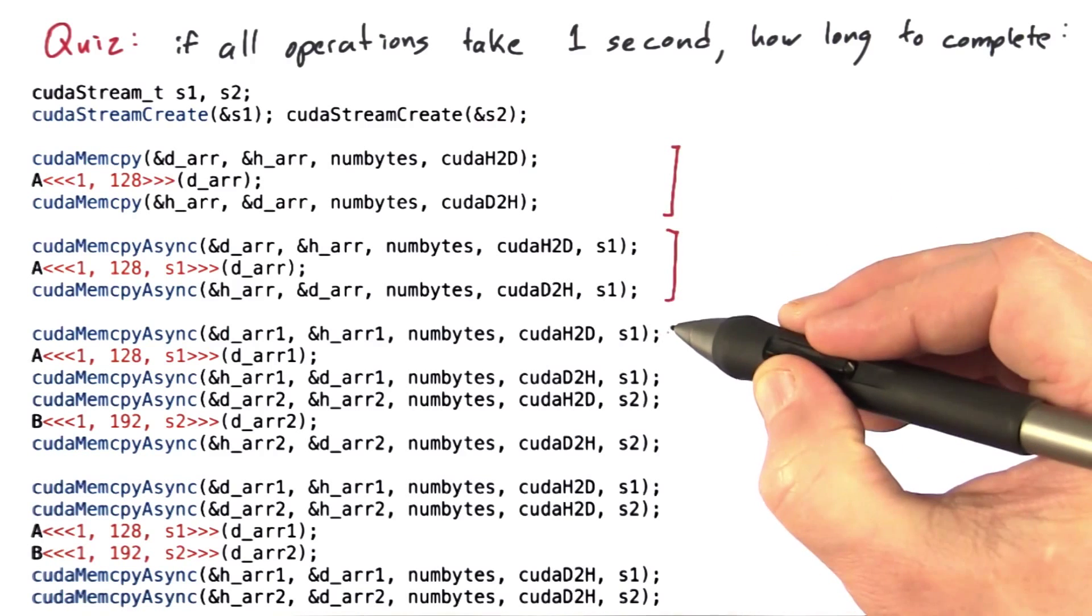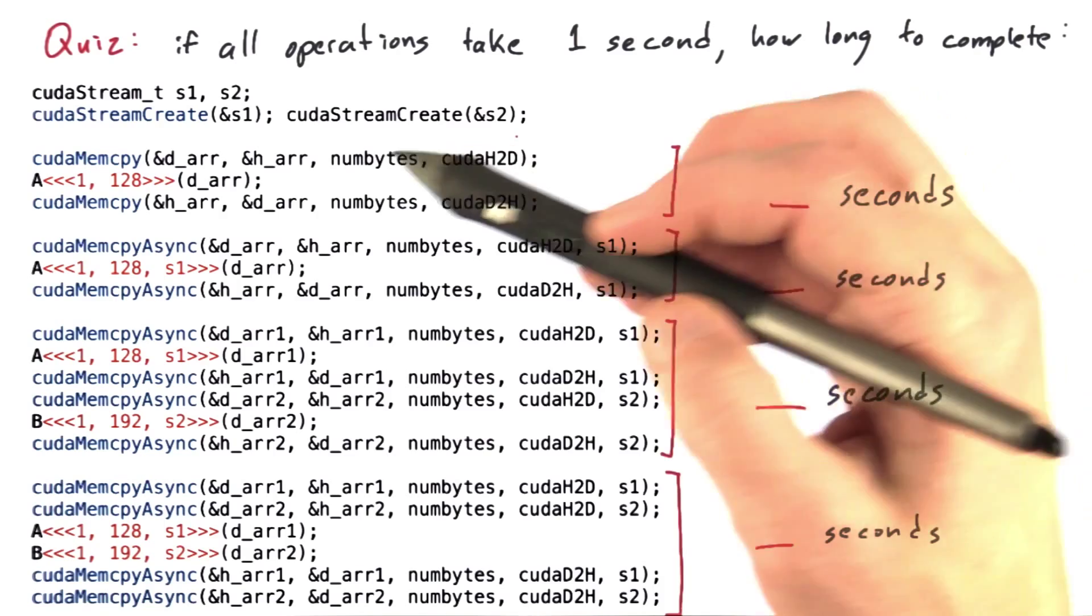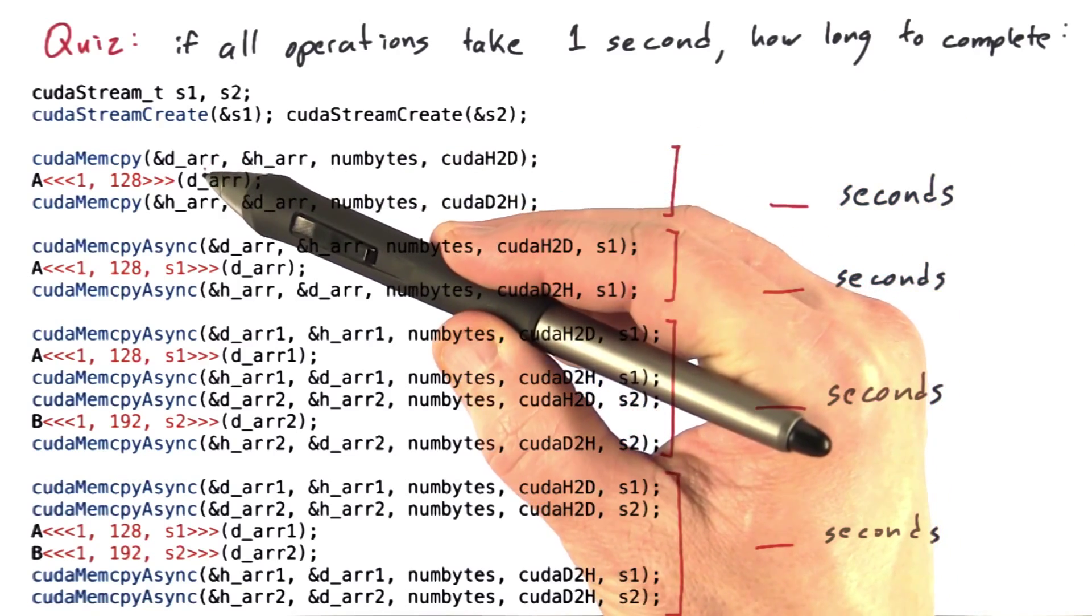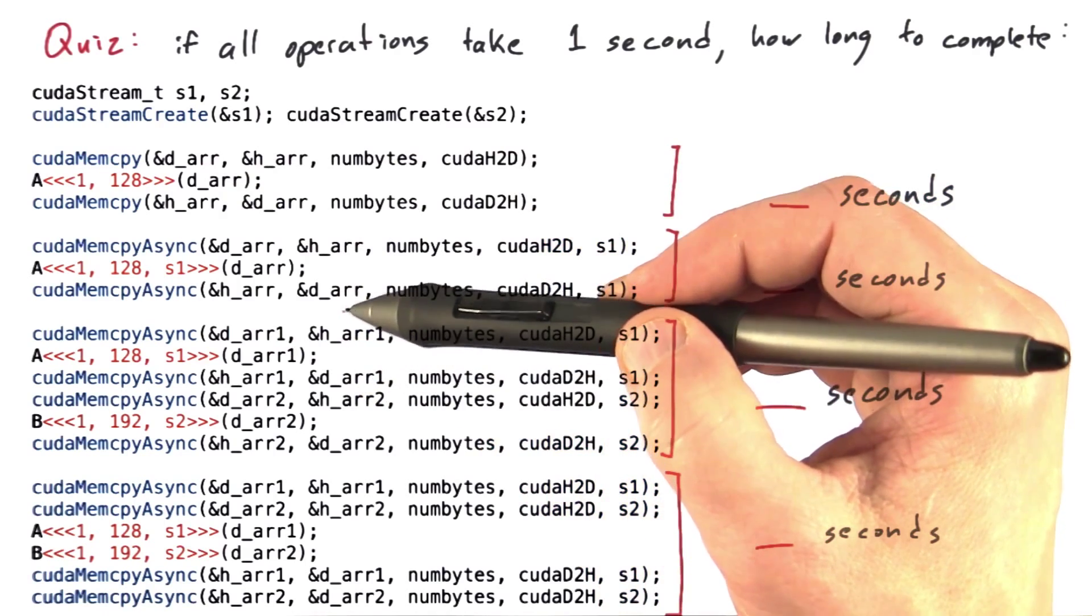I want you to tell me how long each one is going to take in seconds. I've taken a couple of shortcuts here. I haven't shown you dArray, hArray, dArray1, hArray1, 2—I haven't shown you these things getting allocated.